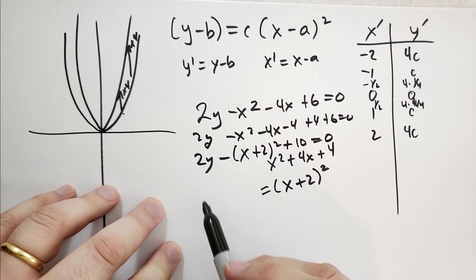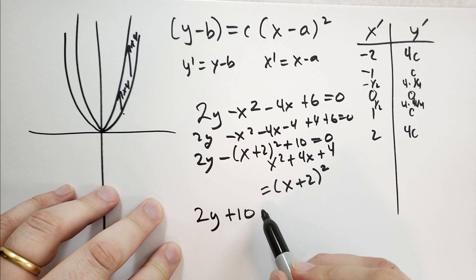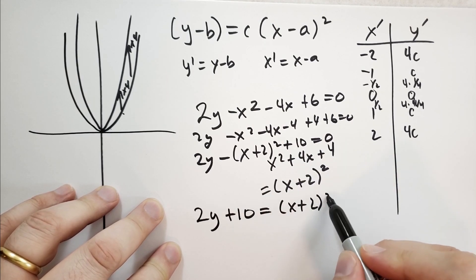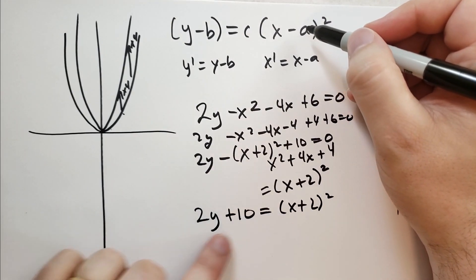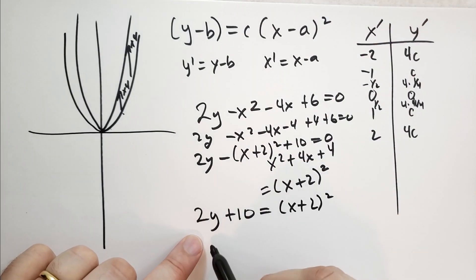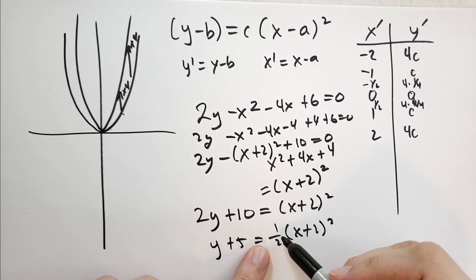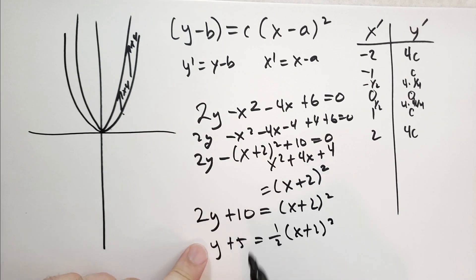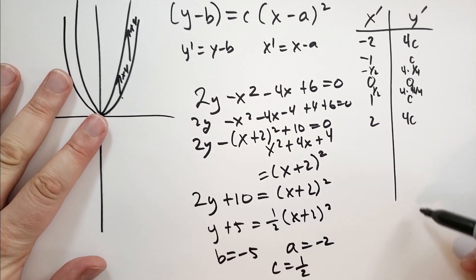So 2y minus (x plus 2) squared plus 10 equals 0. Now we have 2y plus 10 equals (x plus 2) squared. Now we have this naughty 2, so we get y plus 5 equals 1/2 (x plus 2) squared. So we know that b equals minus 5, a equals minus 2, and c equals 1/2.